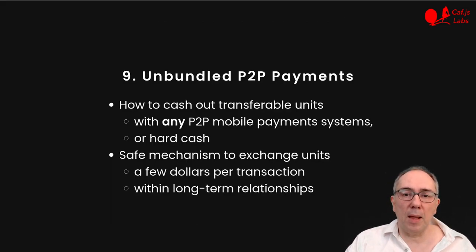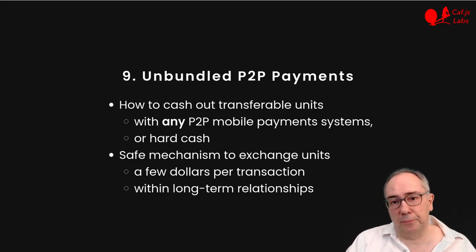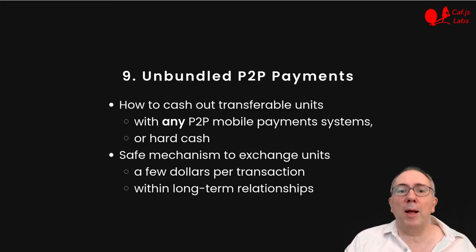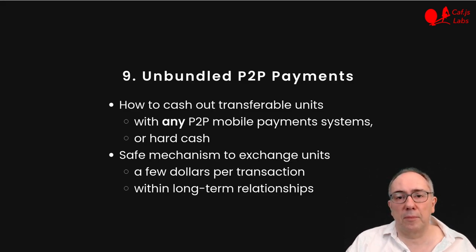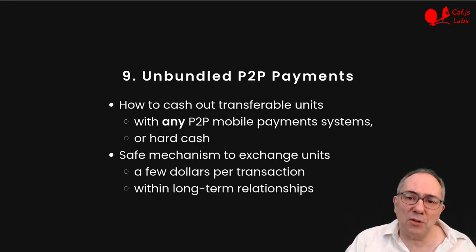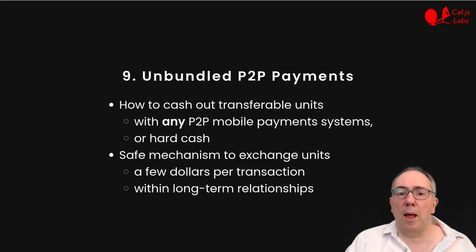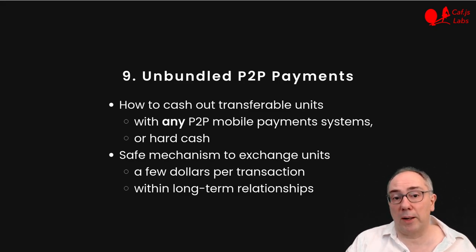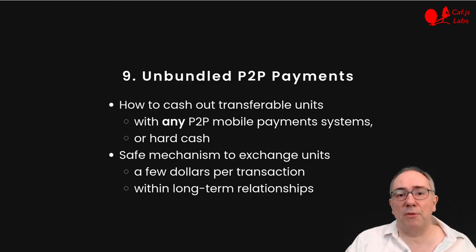9. Unbundled peer-to-peer payments. How do you cash out without a credit card or bank account? Peer-to-peer mobile payment systems are much more widespread and mostly free. Or you could also trade units for hard cash. But in order to do that, you need a reasonably safe mechanism to exchange units — one that is agnostic to the payment method and does not require complex mediation or overhead. The general problem is intractable, but if we make the assumption that payments are just a few dollars, mostly within stable long-term relationships, then we can focus on bootstrapping these relationships with minimal fraud costs.